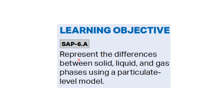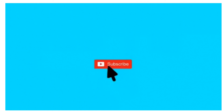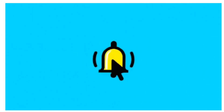The learning objective of this topic was to represent the differences between solid, liquid and gas phases using a particulate level model. We showed the particulate level model for solids, liquids and gases, and used it to explain the differences between these states of matter. Please like and subscribe to the channel Log Iota and press the bell icon.